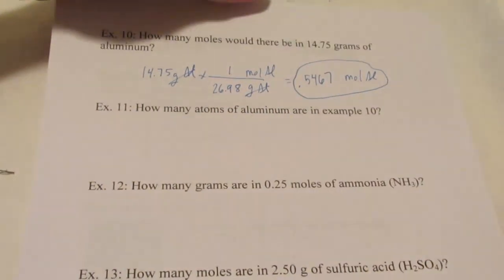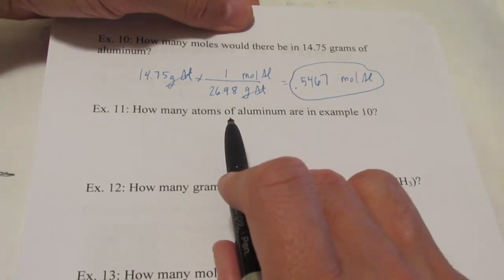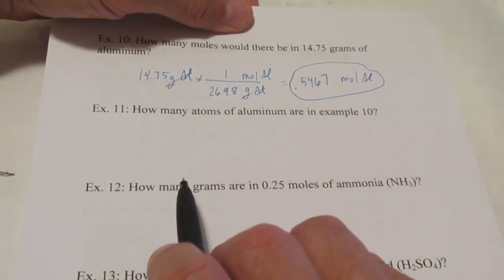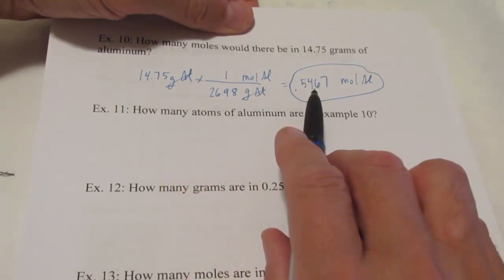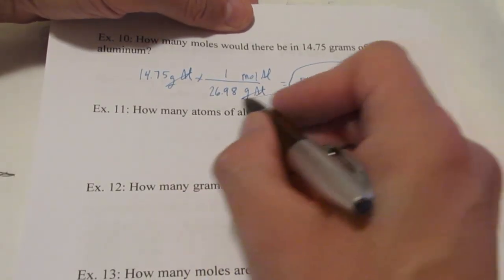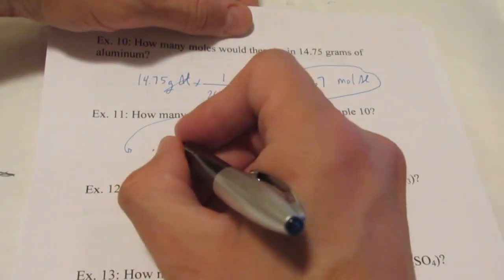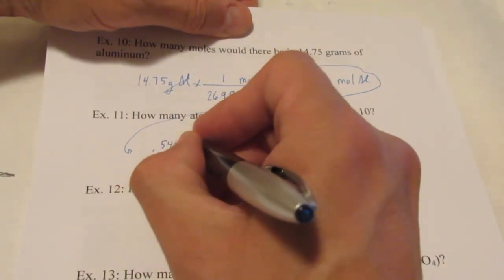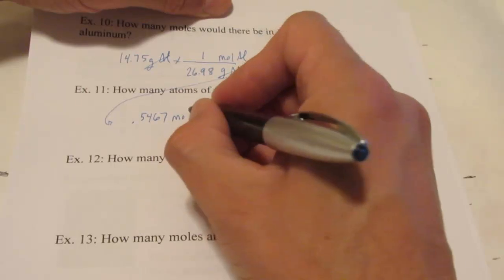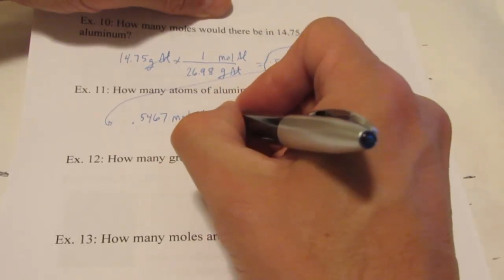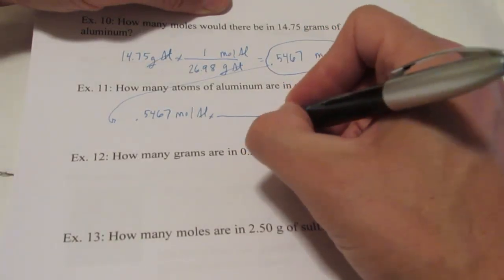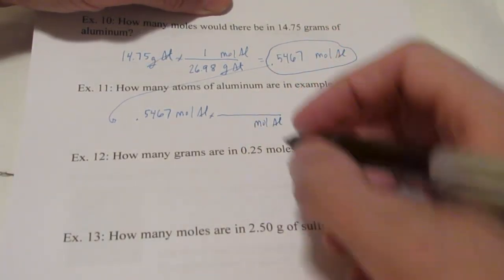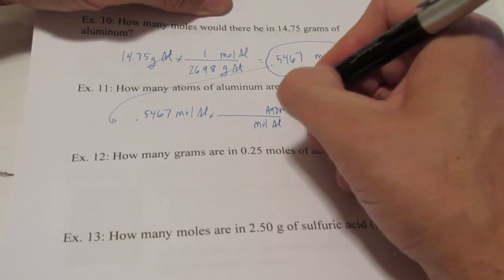Alright, number 11. How many atoms are in example 10? How do we go from moles, which we have right now, to atoms? Well, let's take this answer here. 0.5467 moles of aluminum. We will put moles on the bottom. We want to divide out of it. And this time, we want to get into atoms.